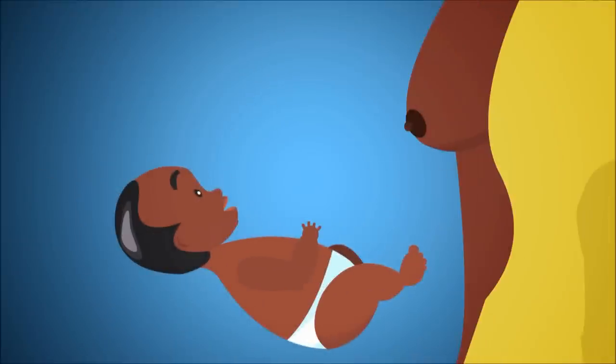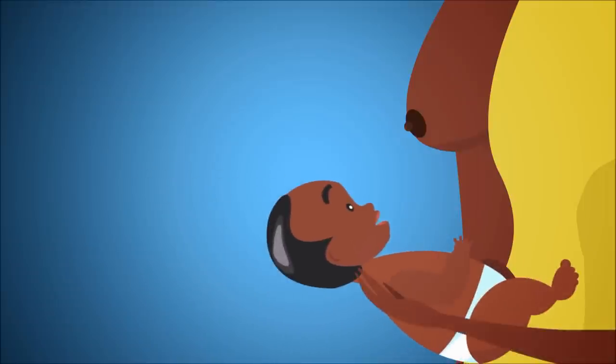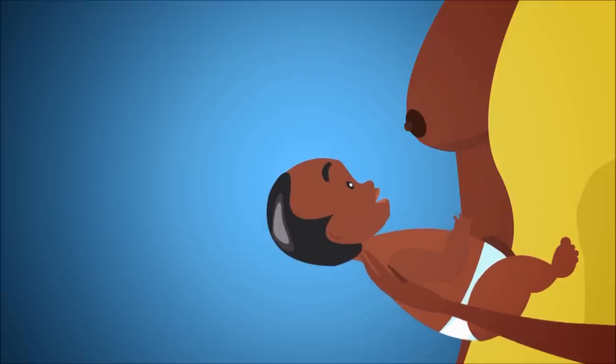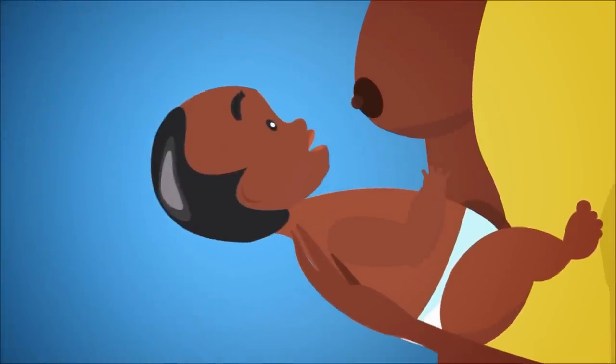To help the baby attach well, hold the baby close, supporting the whole body below the breasts, with the baby's head and body in a straight line. Position the nipple above the top lip and directly across the baby's nose.